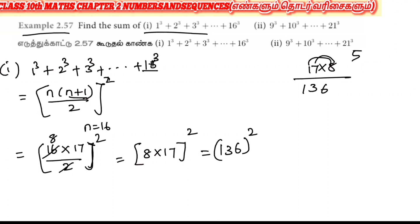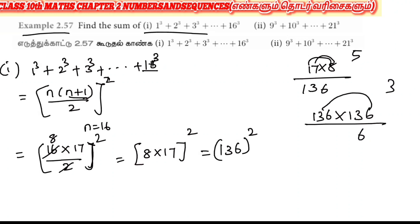So we need 136 squared, that is 136 into 136. 6 sixes are 36, carry 3. 6 threes are 18, plus 3 is 21, carry 2. 6 ones are 6, plus 2 is 8. Then 3 sixes are 18, carry 1. 3 threes are 9, plus 1 is 10. 3 ones are 3, plus 1 is 4.